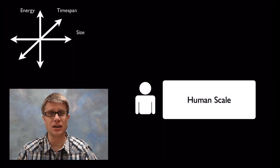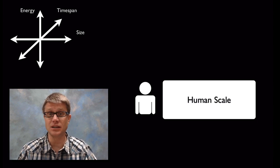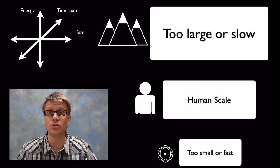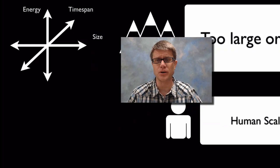To summarize, we've basically got human scale, what we can see and deal with just with our hands and with our eyes. We have those things that are really small and really fast and things that are too large or too slow for us to observe.